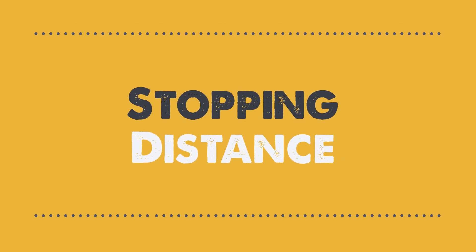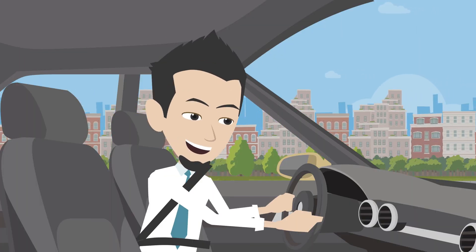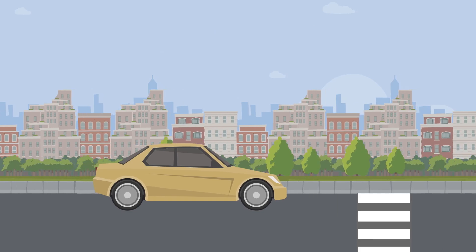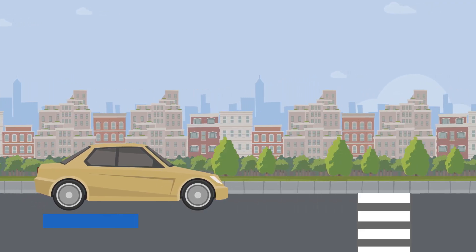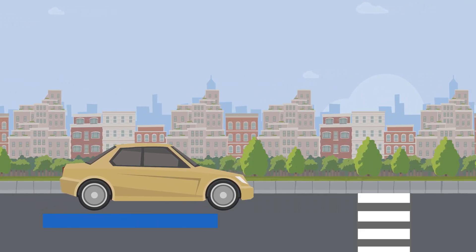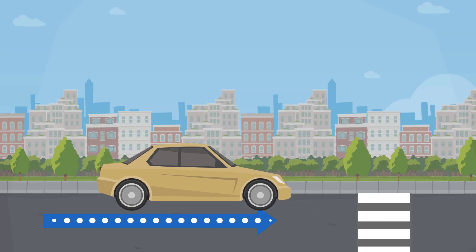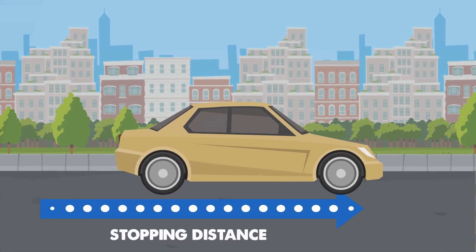Stopping distance. When someone is driving a car and they see an obstacle in the way, they need to stop. The total distance they travel after seeing the obstacle until the car stops is called the stopping distance.